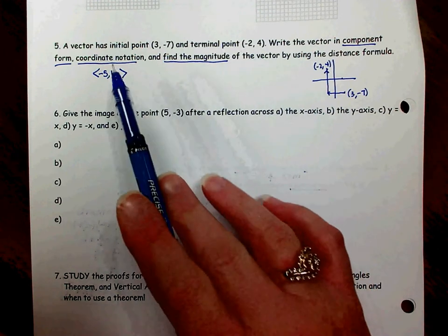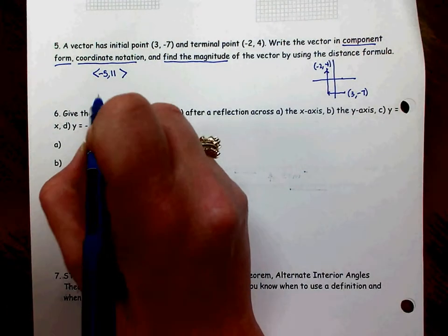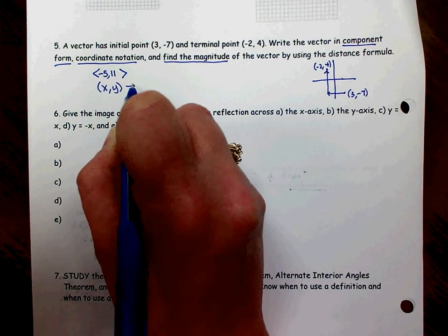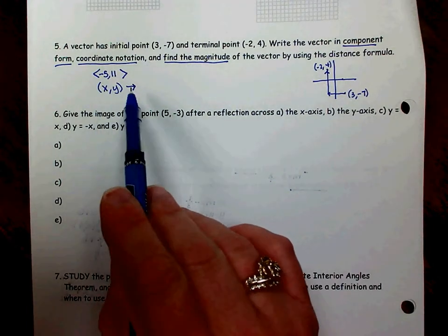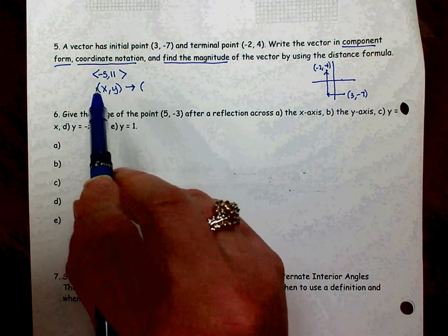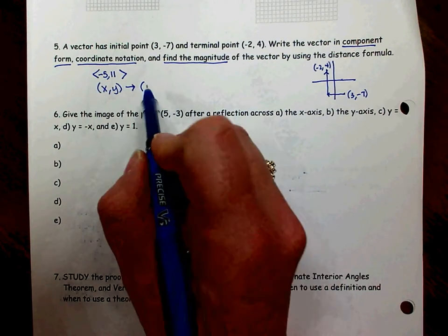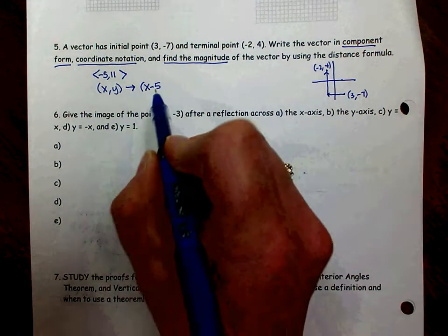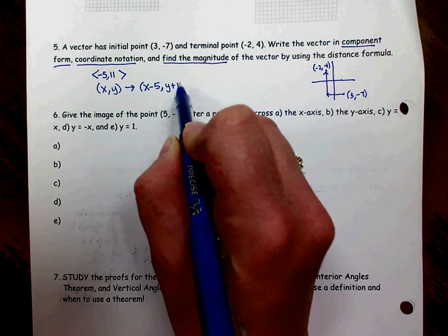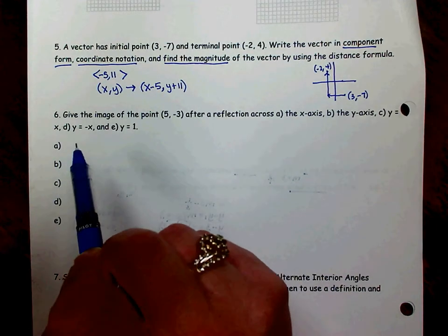The next thing we want to do is write it in coordinate notation which is really easy after we've written it in component form. So coordinate notation remember always starts with a general point (x, y). We always use an arrow showing that we're mapping all of the original points to new points and we describe those new points with our translation showing what we're doing to our x and what we're doing to our y. So since we had to go left 5, that takes my x coordinate and subtracts 5 from it. Since we had to move up 11, that takes my y coordinate and adds 11 to it. So it's really just taking these numbers from your component form and putting them with the correct x and y to show that movement.